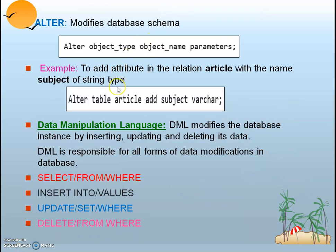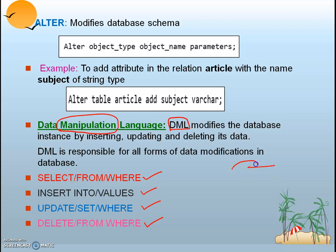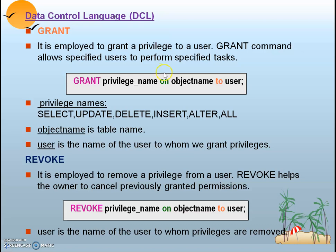The DML commands are: SELECT FROM WHERE, INSERT INTO VALUES, UPDATE SET WHERE, and DELETE FROM WHERE. DML — Data Manipulation Language — as the name implies, is used for modifying or making changes to data inside a table. Operations include inserting, updating, and deleting data. Detailed syntax and examples will be covered in coming lectures.